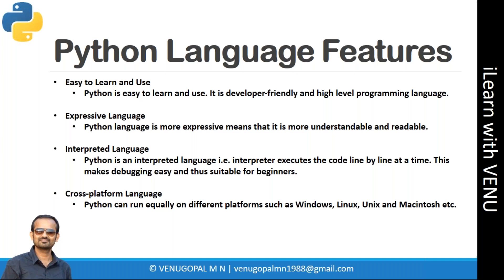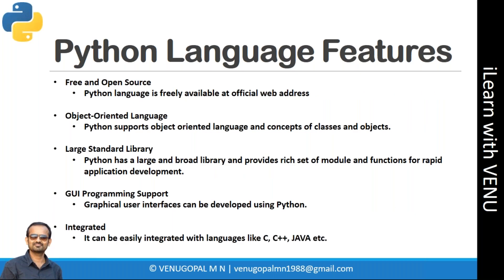Python is also a cross-platform language. Python can run equally on different platforms such as Windows, Linux, Unix, and Macintosh. If you develop a Python application on a Windows machine, you can simply copy and paste the code to a Mac or Linux machine — where Python is already installed — and run it without even a minor change. So it is a portable, cross-platform language.